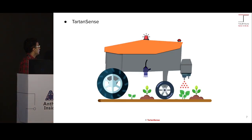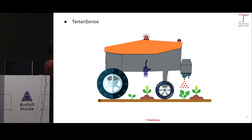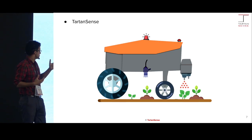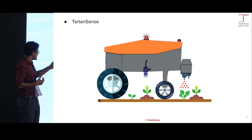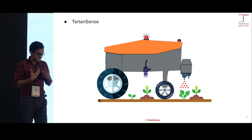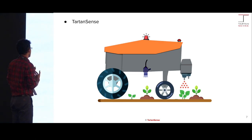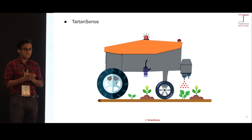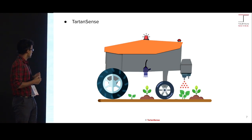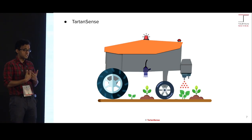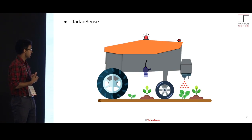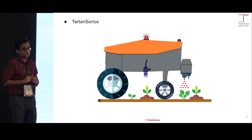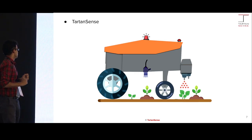A camera at the boom detects weeds using a deep learning technique and sends the weed position to the state estimation algorithm. Once the state estimation algorithm has the weed position and the robot is on top of a weed, we switch on the sprayer, spray the chemical, and kill the weed.